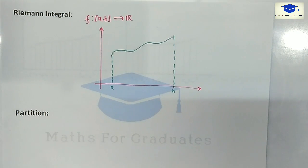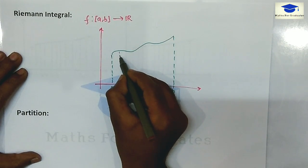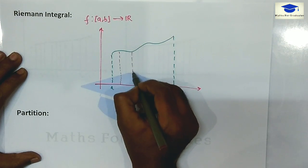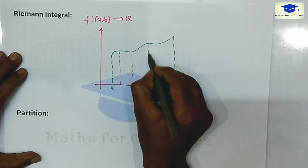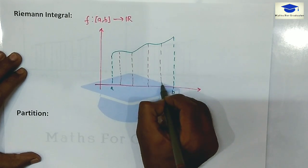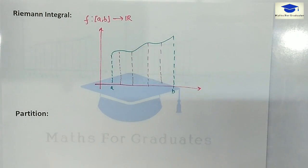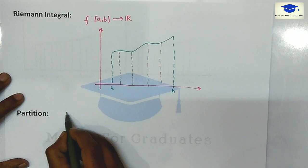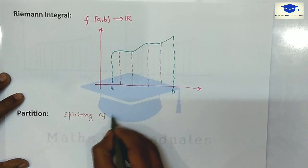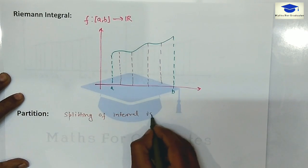We will divide this interval into smaller segments. The length of the intervals may not be equal. This splitting of the interval is known as a partition.